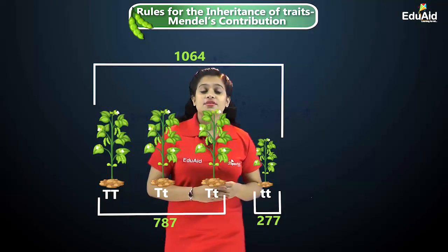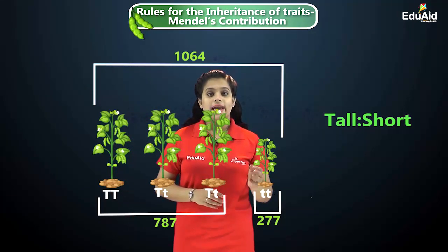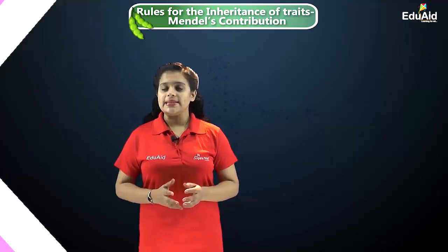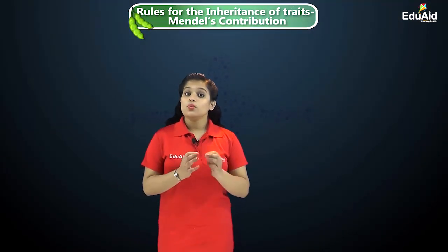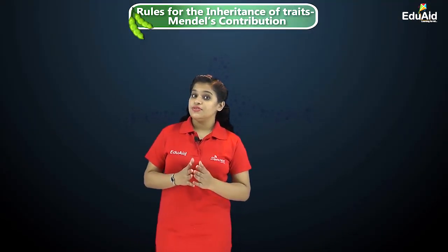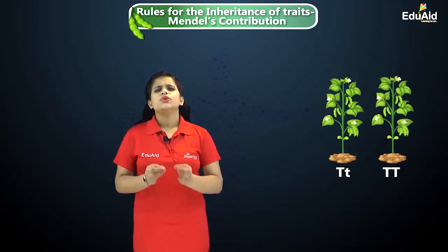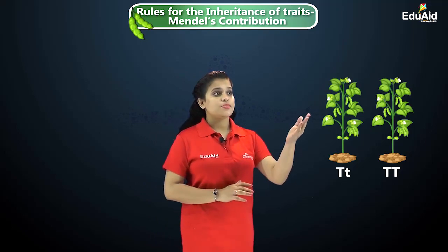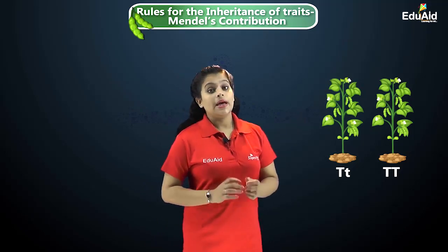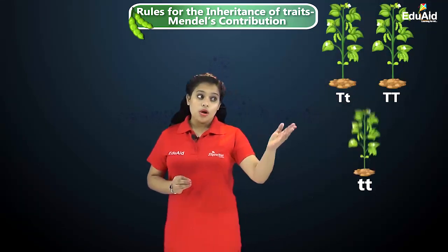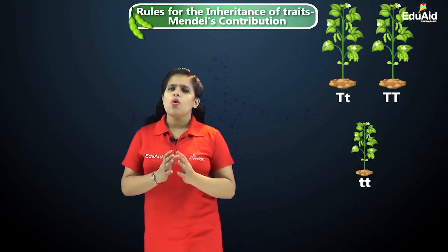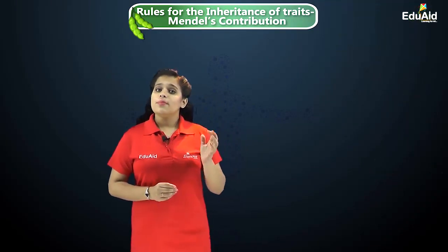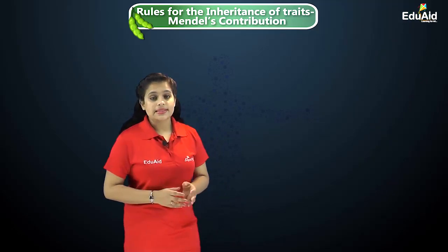This gives us the ratio of tall to short as 3:1. From this, Mendel found out that whenever there is a trait like capital T (T), it will always be expressed even when present with a small t. But traits like small t can only be expressed when present with another small t.